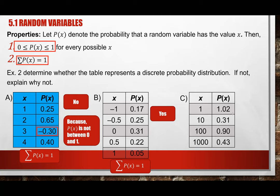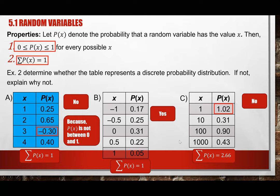For item C, this is not a probability distribution. First, one of the probabilities is bigger than 1, which is a definite violation. Second, adding the probabilities together will give more than 1. Both criteria fail. We only need one criteria to fail to conclude it is not a probability distribution.